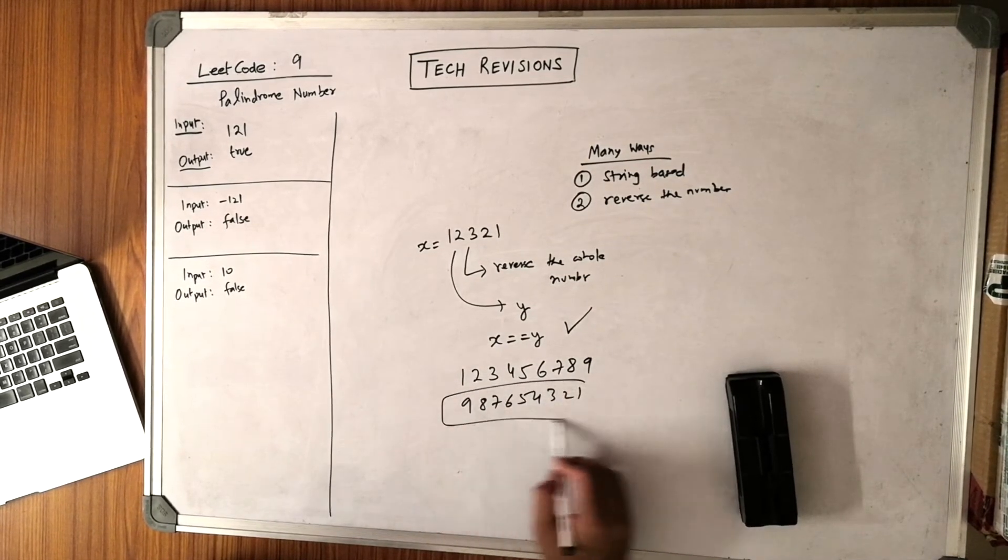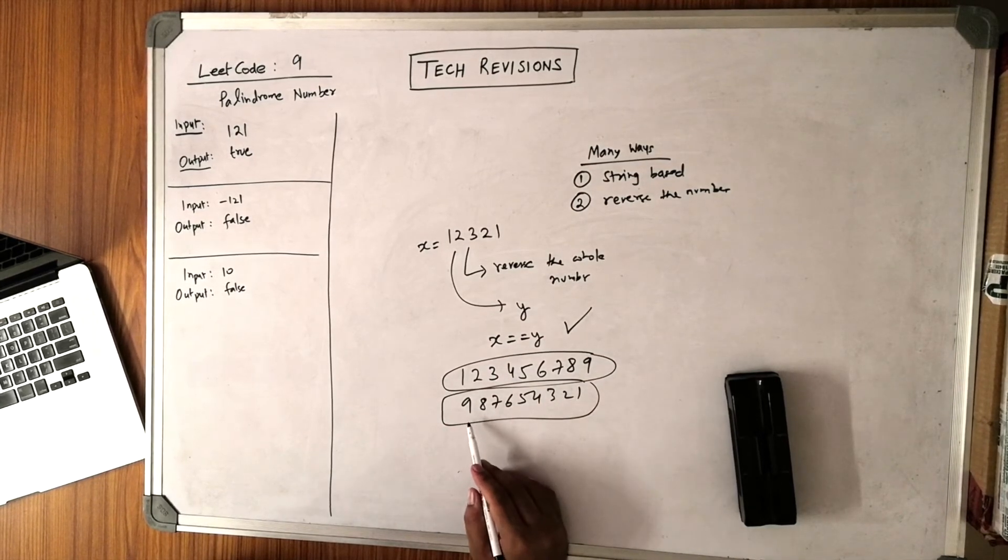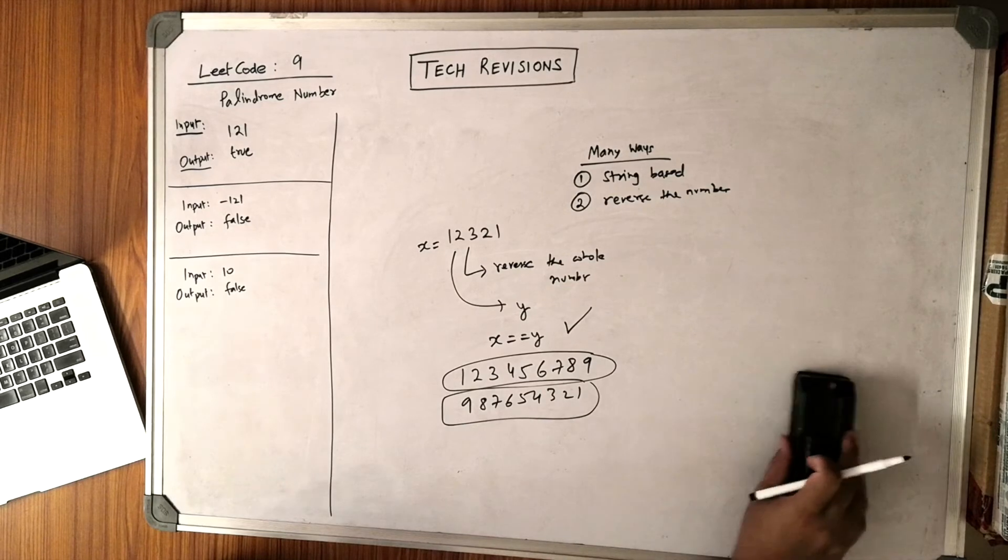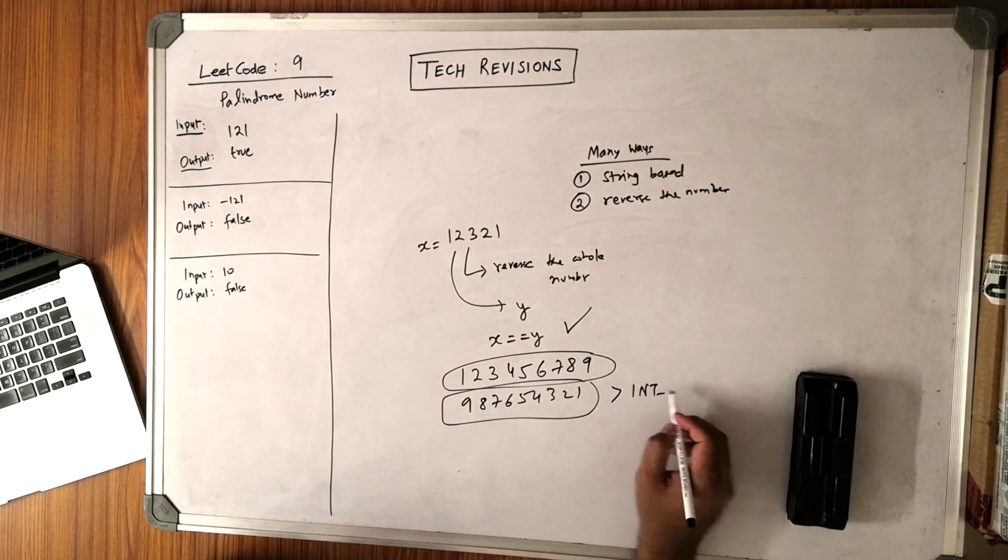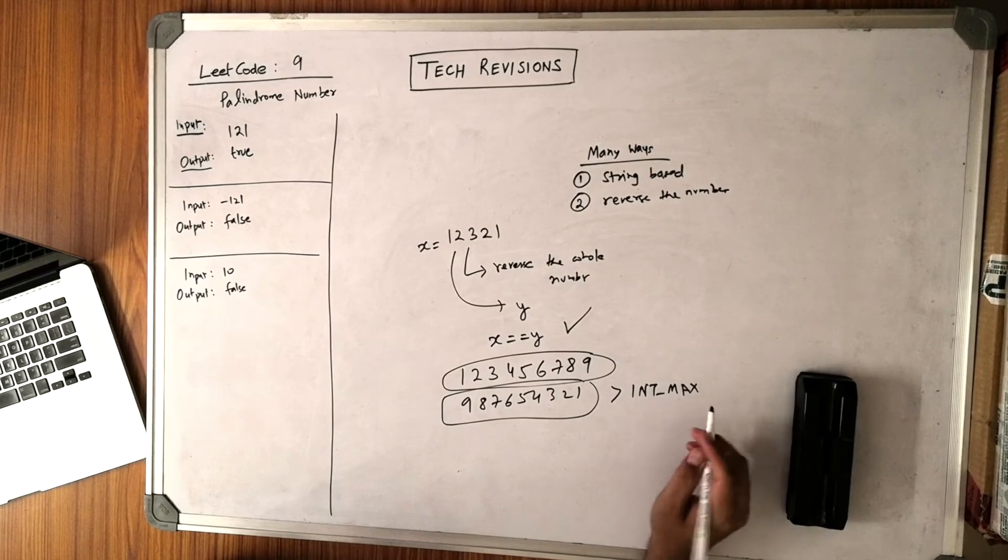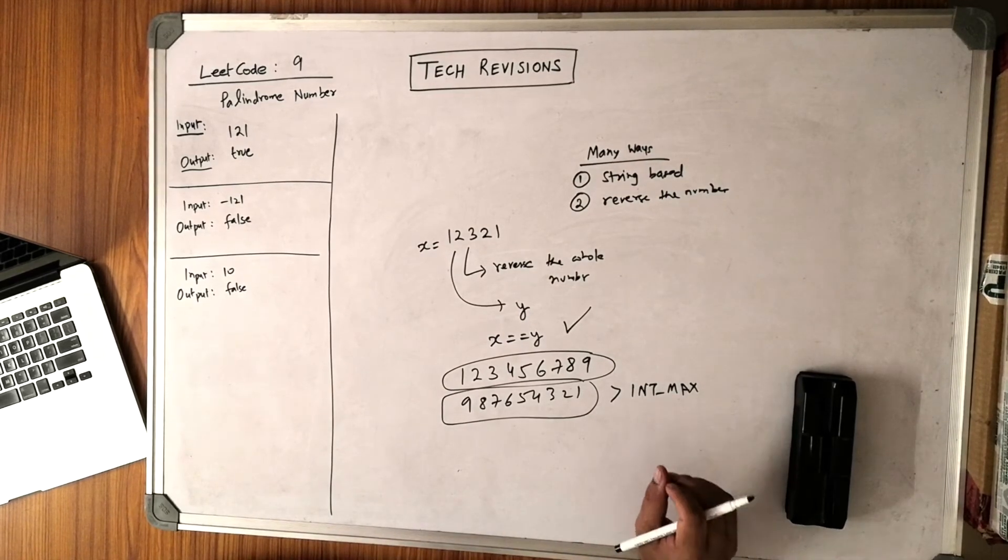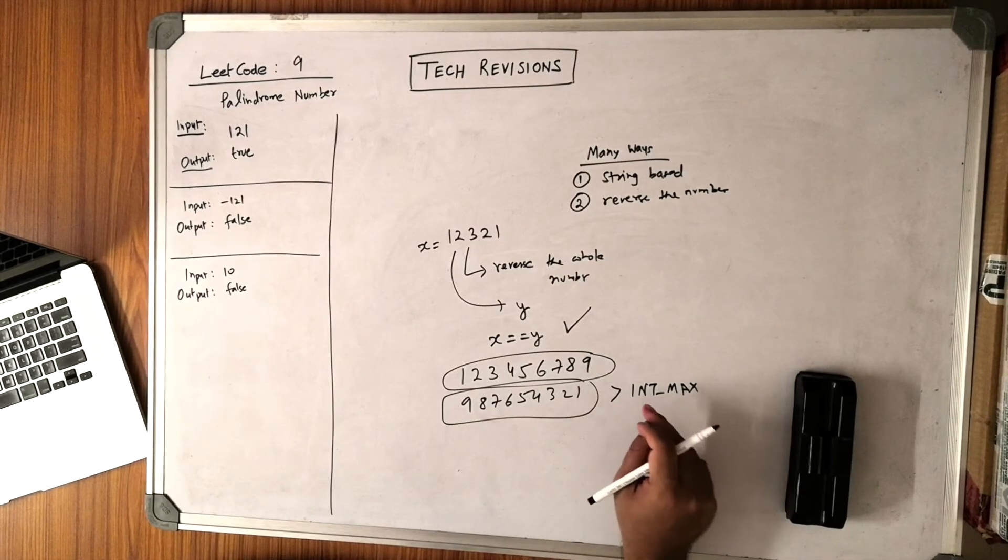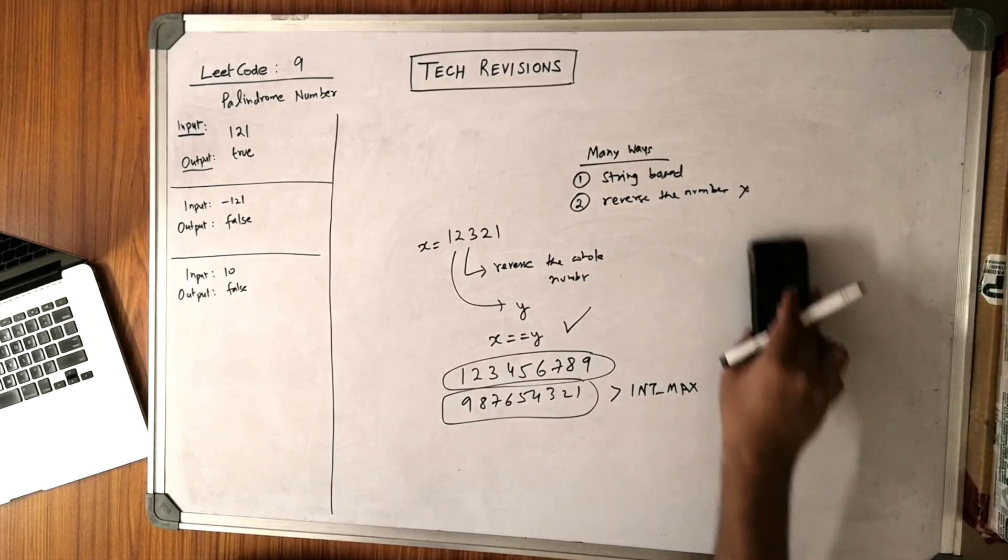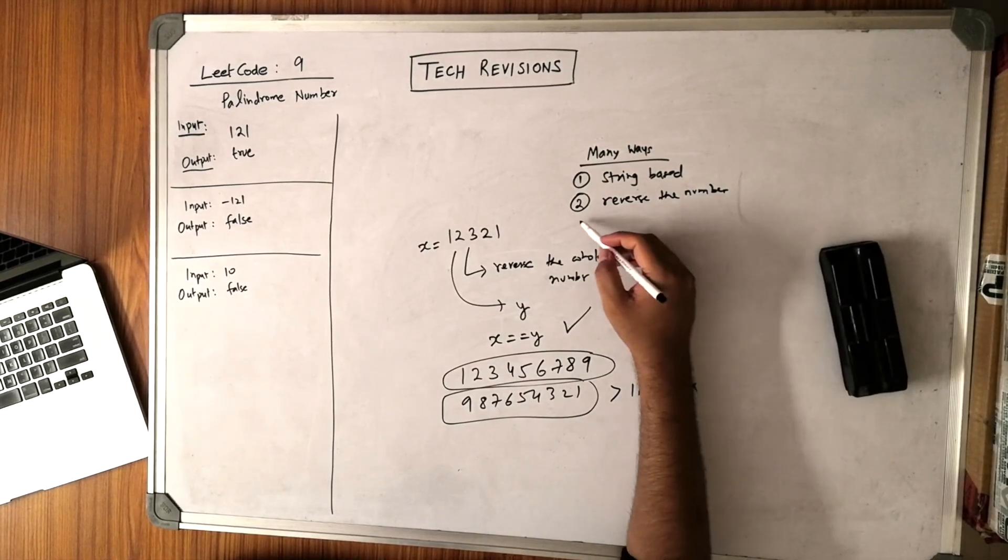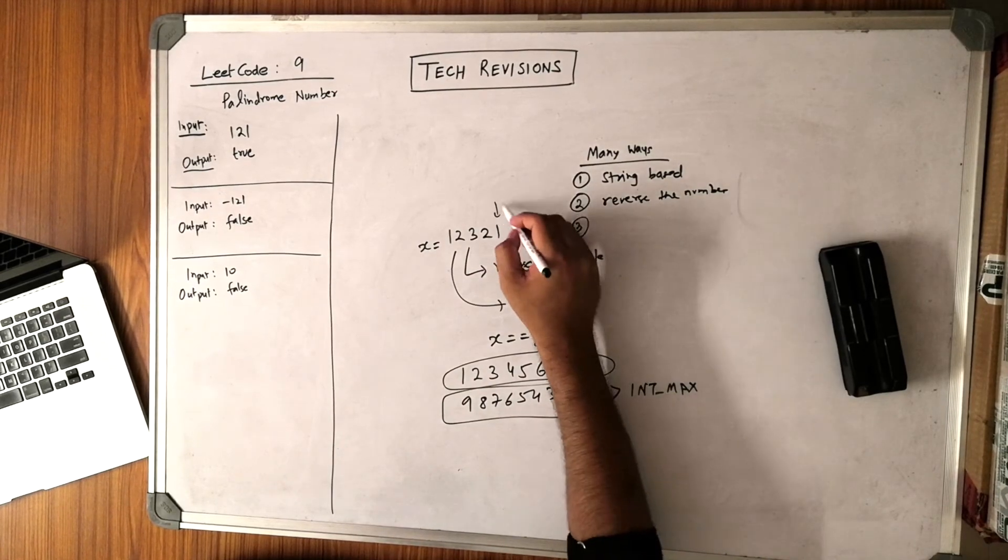This number is a much larger number than this number because this starts at one and this starts at nine. This number could be greater than the int max - whatever is the maximum value allowed to be stored in an integer variable. If that is the case, then this strategy will fail. Then the only option left is the third option which is to just put two pointers on this side and this side.